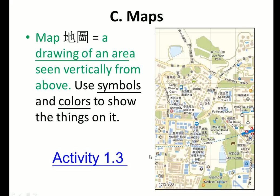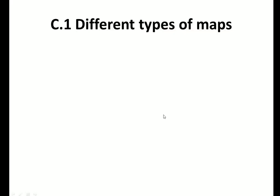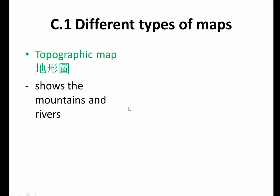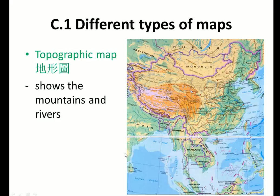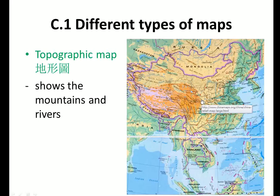A map is a picture but we use different symbols and different colors to represent different things — green may represent the park, and blue color may represent the buildings. There are different types of map. The first type is called topographic map, which is used to show the mountains and rivers. You can see the mountains, the blue lines which are rivers, and the green area which is the lowland.